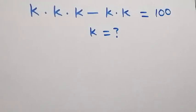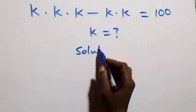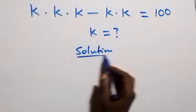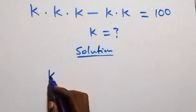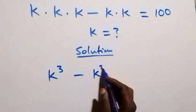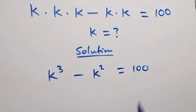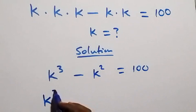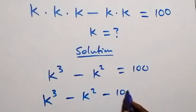Hello, you are welcome. How to solve this nice algebra problem. From what is given, we have k times k times k, which can be written as k raised to power 3, then minus k times k, that's k squared, equals 100. We can take 100 to this side, and this becomes k raised to power 3 minus k squared minus 100 equals zero.